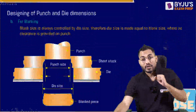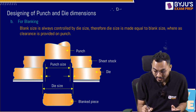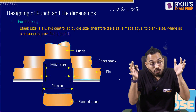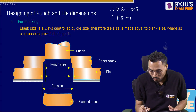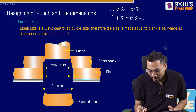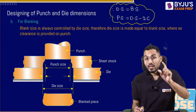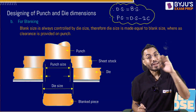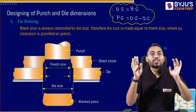For blanking operation, the blank size is controlled by the die size, so the die size is made exactly equal to the blank size and designed first. Once the die size is designed, the punch size is calculated by subtracting the clearance: punch size = die size − 2C. To summarize: in punching, punch size equals hole size and clearance is provided on the die. In blanking, die size equals blank size and clearance is provided on the punch.